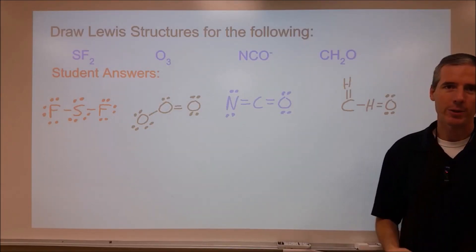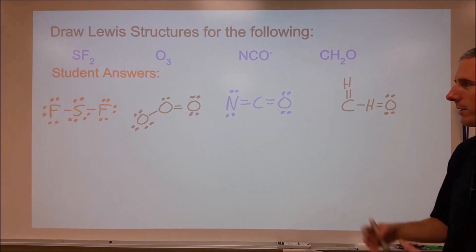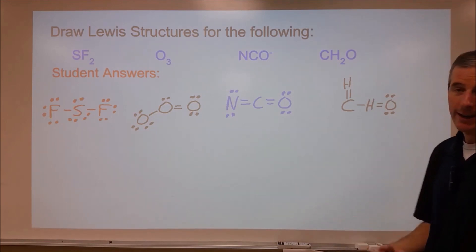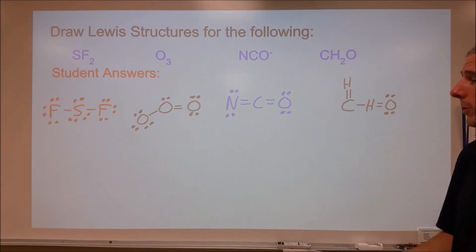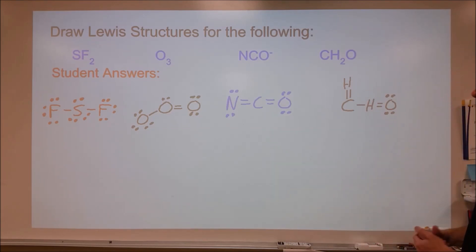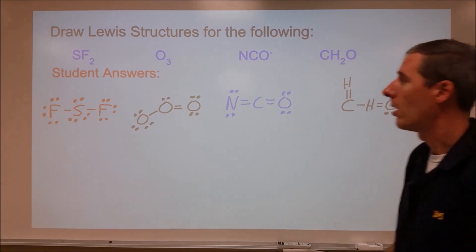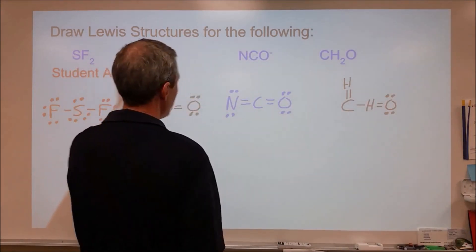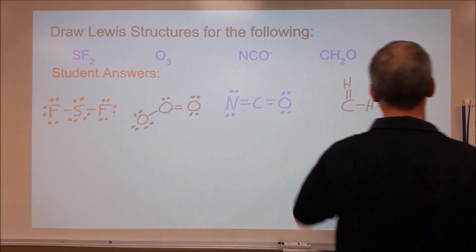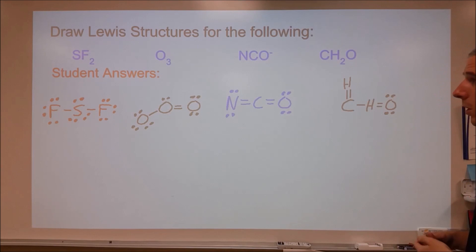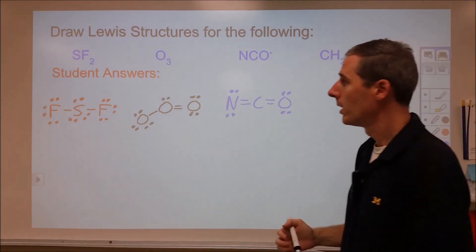Welcome to chemistakes where we go through actual student responses to chemistry questions and look at what's wrong with them and how to learn from that mistake in order to really understand the chemistry behind this. Here we're looking at four different Lewis structures drawn by students, all of which are incorrect: SF2, O3, NCO-, and formaldehyde CH2O. We want to look at why a student drew the Lewis structure incorrectly, what piece of information they were missing, and then how to use that to be able to do Lewis structures better.